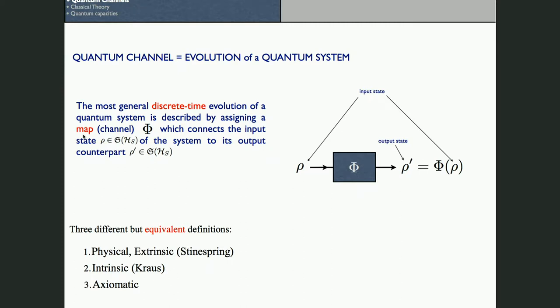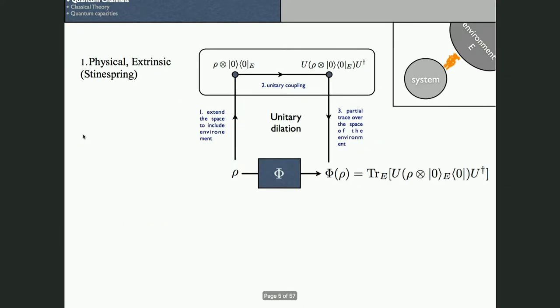There are several ways to characterize this kind of mapping, and there are at least three equivalent ways of introducing this object: a physical or Steinspring representation, an intrinsic or Krauss representation, and finally an axiomatic representation.